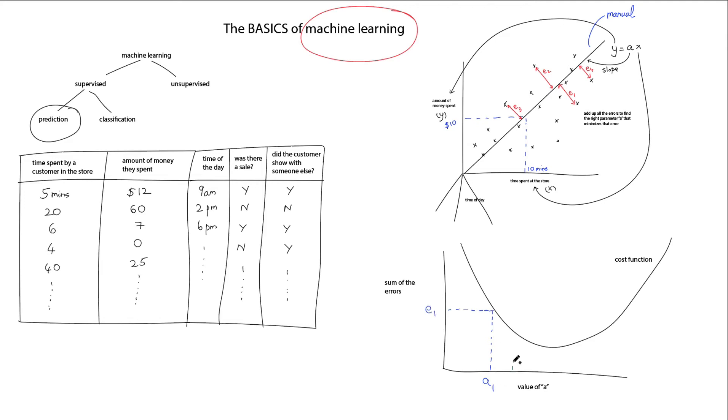In this example, if we change the value of a to a2, or we picked a value of a2, then our error reduces further. This means we're getting a model or a straight line that represents the data much better.